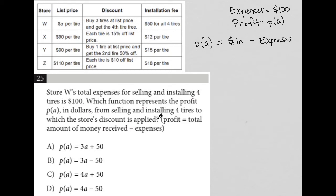How much money is coming in if someone is buying and installing four tires? Well, for store W, the list price per tire is $8, so that should be four times A.